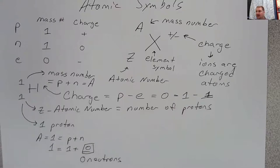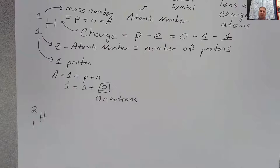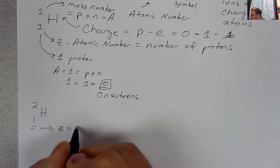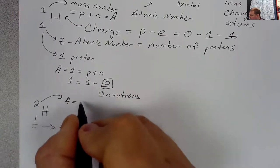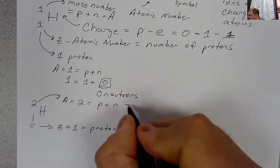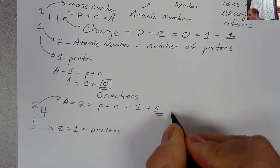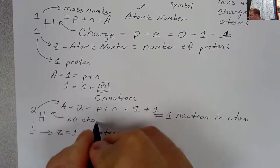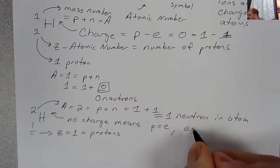Let's take a look at another atom of hydrogen. This one still has no charge, so we still know protons and electrons will be equal. The atomic number equals one, so we still have one proton. The mass number equals two, which equals the number of protons plus neutrons. We know we have one proton, so that must mean this atom has one neutron. With no charge, the number of protons and electrons are equal, so we have one electron.